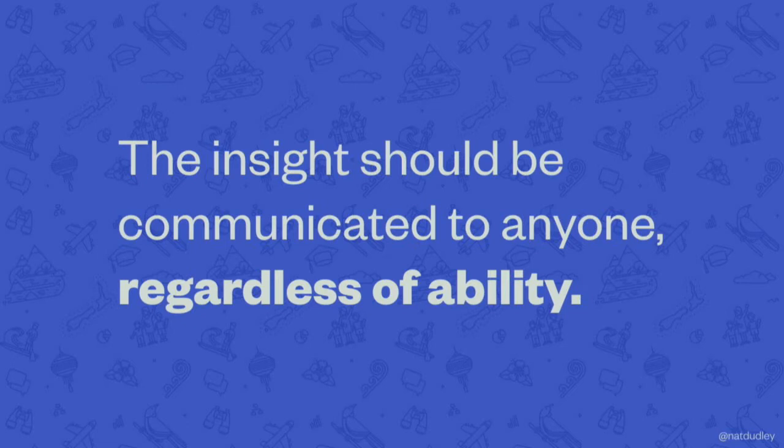The key thing for accessibility is that the insight should be communicated to everybody regardless of their abilities. This is not really a complicated concept to wrap your head around, but we mess this up in so many ways. We don't put alt text on visualizations. We don't make data keyboard navigable. We don't provide an alternate way to actually read the data. Some people need the tables to read the data.